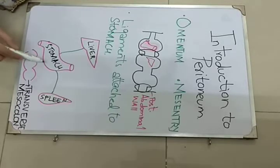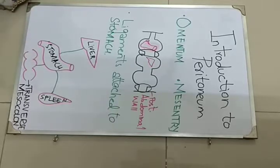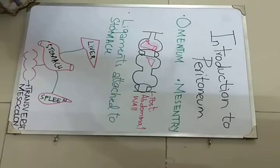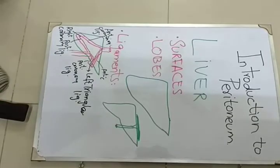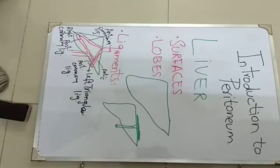And the ligament which joins the stomach to the transverse mesocolon is called the gastro-hepatic ligament. As the peritoneum folds around the liver also, there are some relations with respect to the liver which are discussed in the peritoneum and the tracing of the peritoneum. So I thought it necessary to tell you some of the terms regarding the liver which will be used in the further lectures.